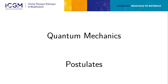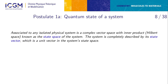Before starting quantum computing, we need to establish the quantum mechanics postulates, because they drive quantum computing. The first postulate is the quantum state of a system: associated to any isolated physical system is a complex vector space with inner product — a Hilbert space, or state space. The system is completely described by its state vector, which is a unit vector in the state space.